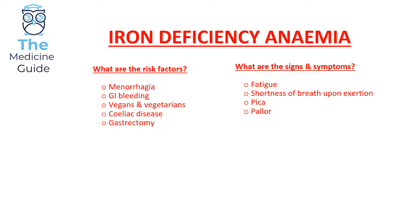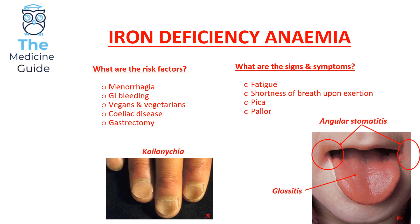Other symptoms include pallor. High yield symptoms include angular stomatitis and glossitis, which is described as a red beefy tongue. Patients can also suffer from koilonychia — spoon-shaped nails — typically found at the extremes of iron deficiency anaemia, as illustrated in the picture shown.